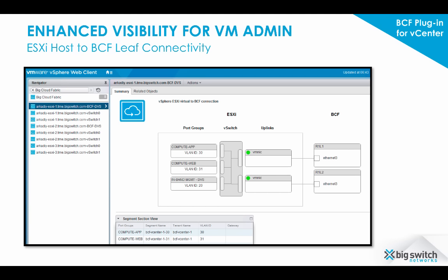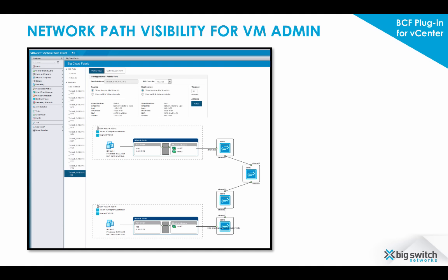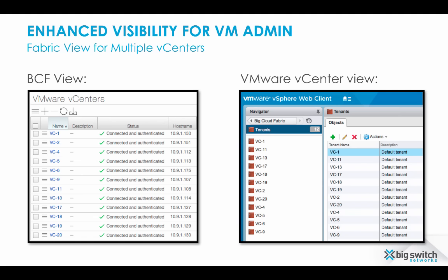Big Cloud Fabric plugin for vCenter provides visibility into the physical fabric for VM admins. VM admins can also utilize the Big Cloud Fabric test pack feature to validate VM-to-VM communication for the fabric, which can be done directly from the Big Cloud Fabric plugin for vCenter. The plugin also allows for a consolidated view of network configuration for all vCenters connected to the fabric.